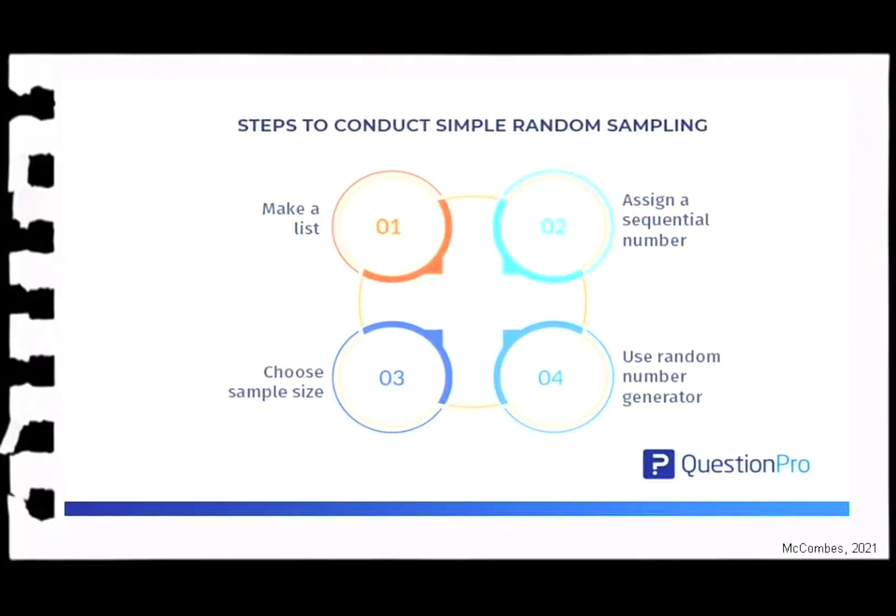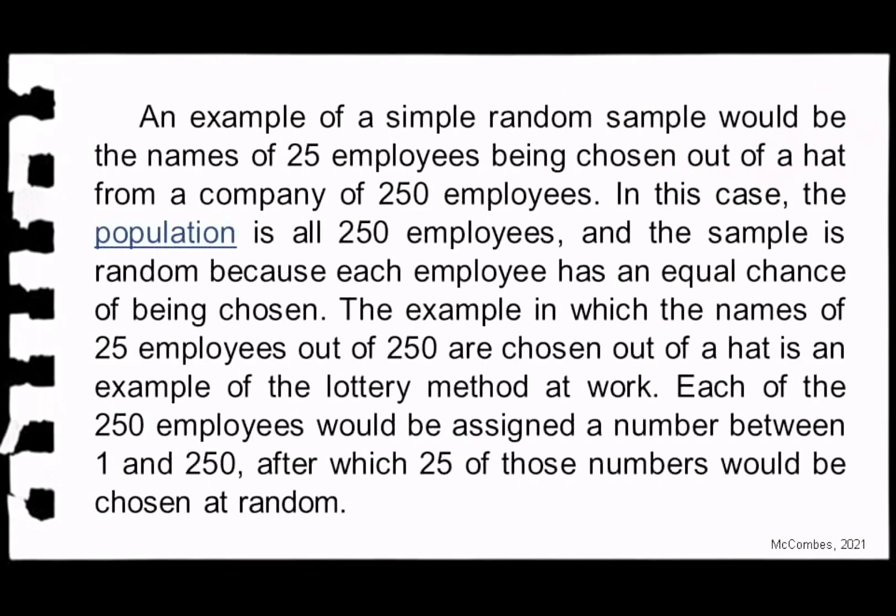Steps to conduct simple random sampling: make a list, assign a sequential number, choose a sample size, and use a random number generator. An example would be the names of 25 employees chosen out of a hat from a company of 250 employees. The population is all 250 employees, and the sample is random because each employee has an equal chance of being chosen. This is an example of the lottery method — each of the 250 employees would be assigned a number between 1 and 250, after which 25 of those numbers would be chosen at random.